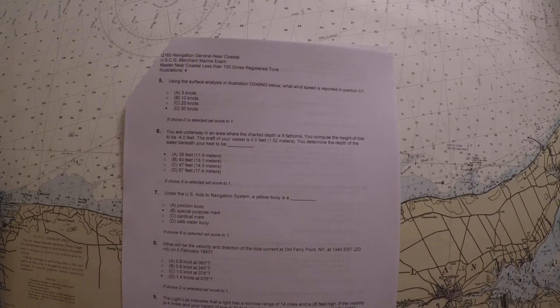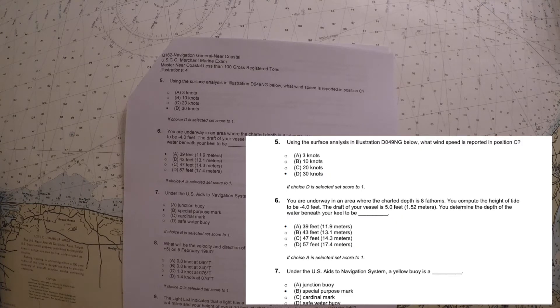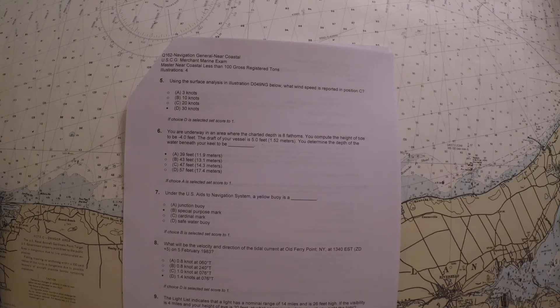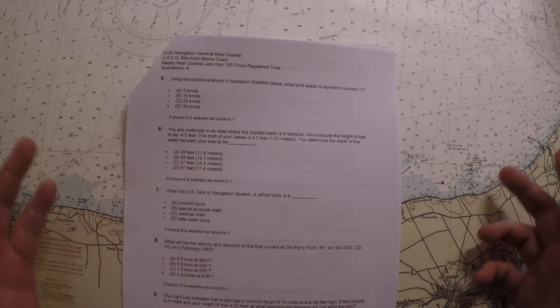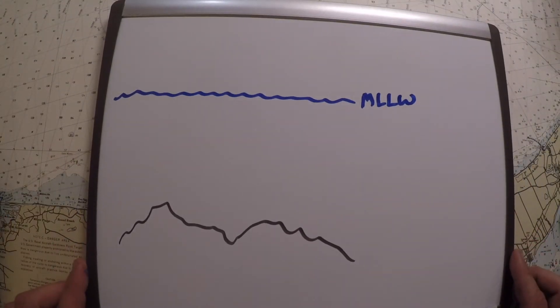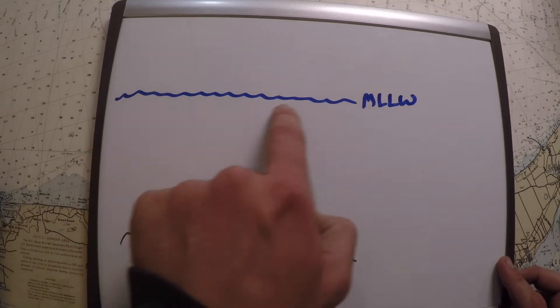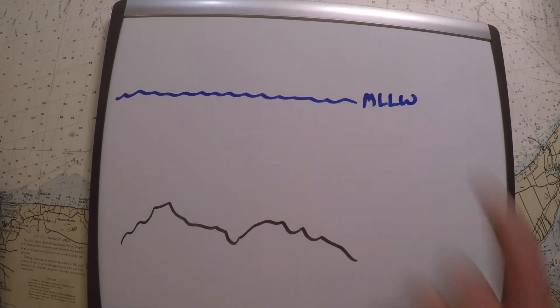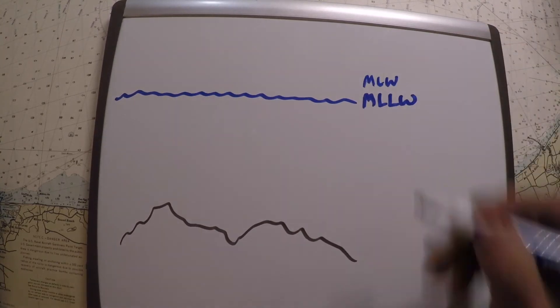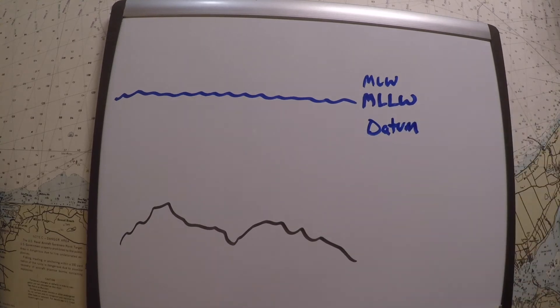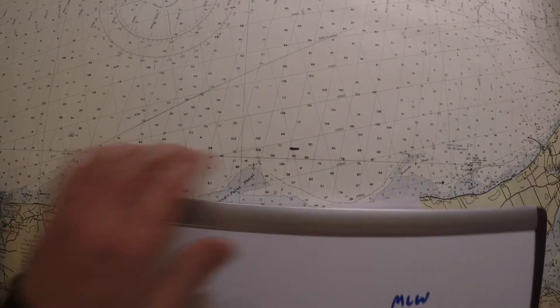All right, for our next question, we're underway and there's a charted depth of 8 fathoms. You compute the height of tide to be negative 4 feet. It gives you your vessel draft and it asks you to determine the depth beneath your keel, and it's all given in feet. So you can see it's charted in fathoms, it's given in feet, we're going to have to do a conversion. That's fine though. So the situation is kind of as follows: here's the ocean floor, here's the ocean surface, and it's maybe charted at mean lower low water, but it really doesn't matter. It could be mean low water, whatever the chart datum is set to.